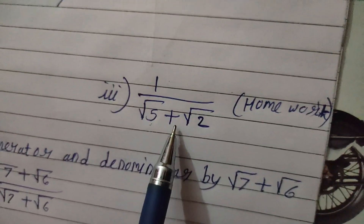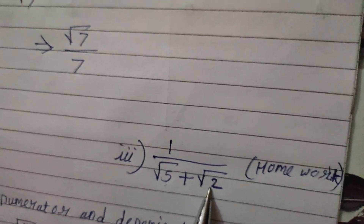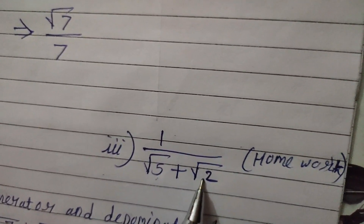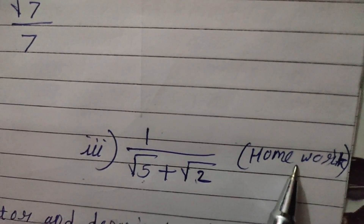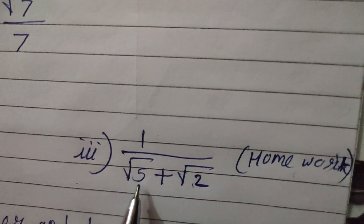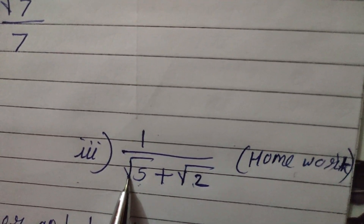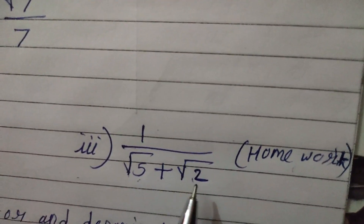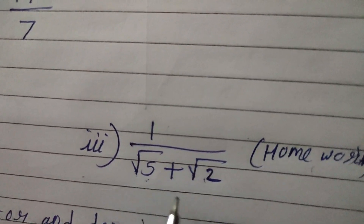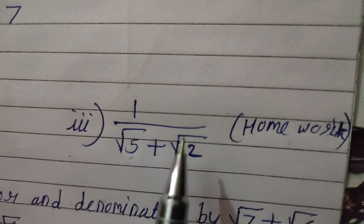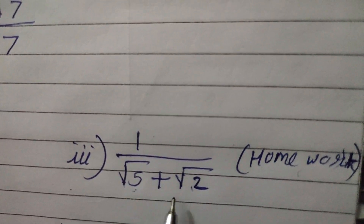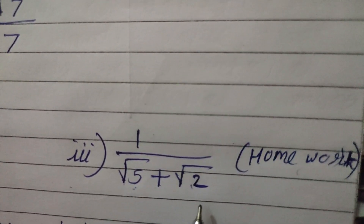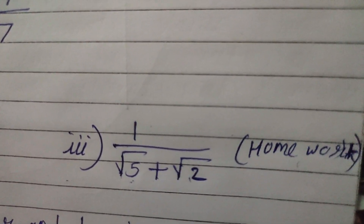The third sub-question, 1 upon root 5 plus root 2, is given as homework. The rationalizing factor of root 5 plus root 2 is root 5 minus root 2. Multiply the numerator and denominator by root 5 minus root 2 to get the answer.